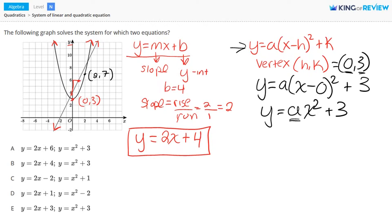(2, 7) is a point on our parabola. So let's plug the point (2, 7) into this equation. We have 7 equals a times 2 squared plus 3. This gives us 7 equals a times 4 plus 3. We'll subtract 3 on both sides, and we get 4 equals 4a. Dividing by 4 on both sides, we're left with a equals 1.